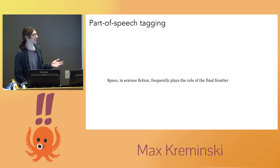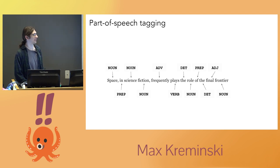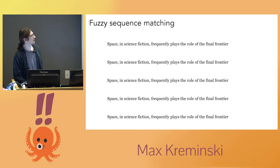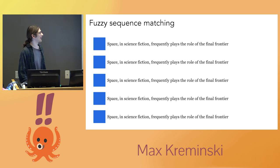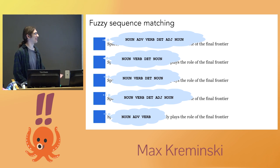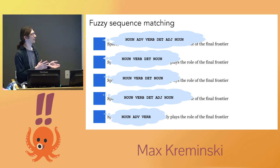Instead, we're going to do something more natural language processing heavy. We take a source input — in this case a sentence from my blog: "Space and science fiction frequently plays the role of the final frontier." We go through and for each word ask: what part of speech is it? There are a lot of libraries that do this; I use something called POS.js for part-of-speech JavaScript, but there are any number of tools. Then we expand it out to a bunch of copies and do some fuzzy sequence matching on these copies. For each copy, I'm creating a matcher — a little object with a pattern of parts of speech it's looking for. The one at top is looking for a noun followed by an adverb followed by a verb followed by a determiner followed by an adjective followed by a noun. The one below is looking for a noun followed by a verb followed by a determiner followed by a noun, and so on. Crucially, between these words there can be other words that it's just ignoring — and those are the words that get blacked out in the output if that matcher wins.